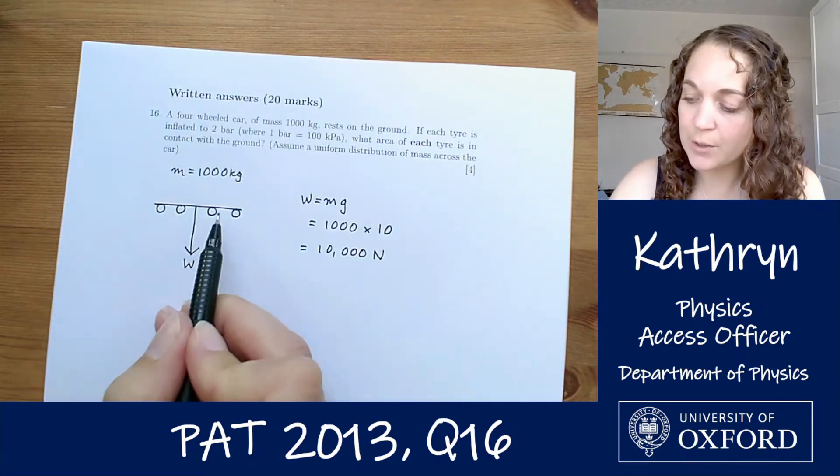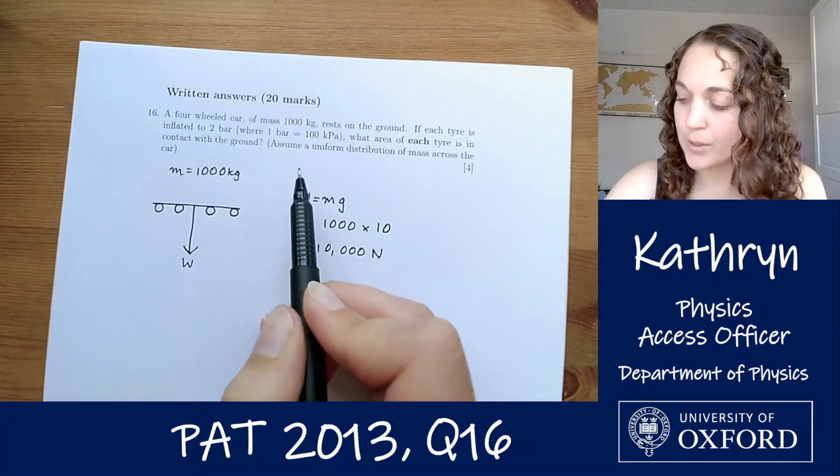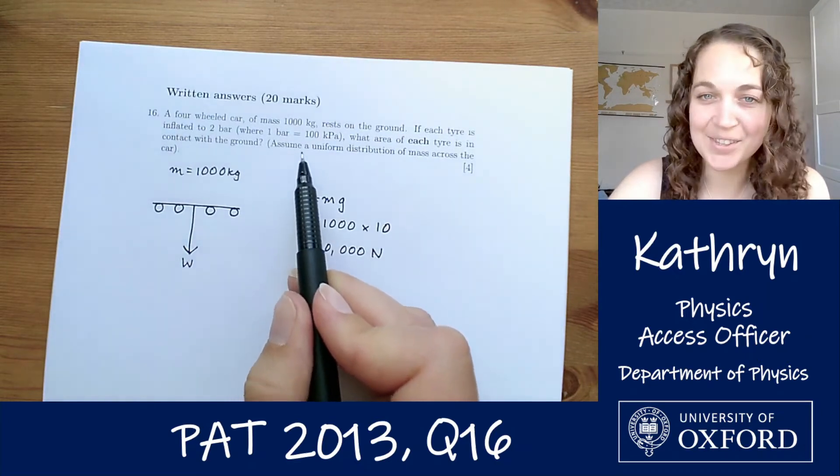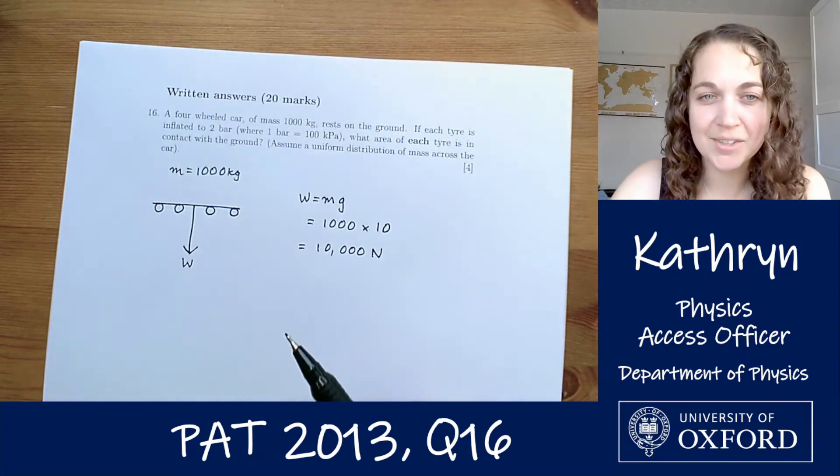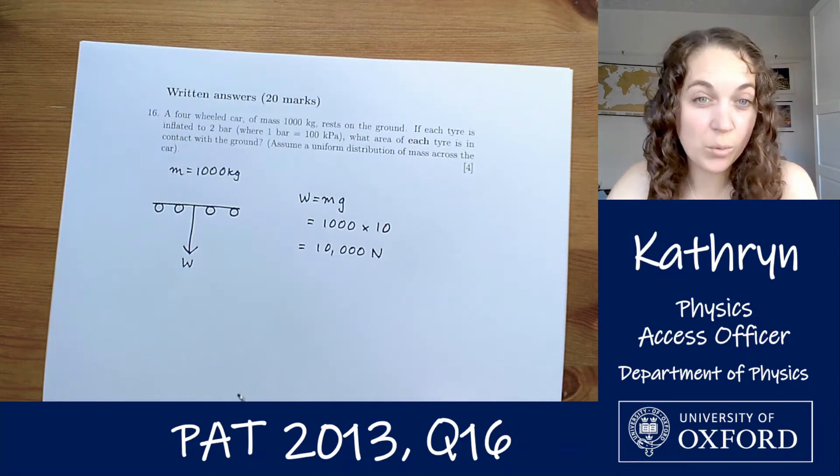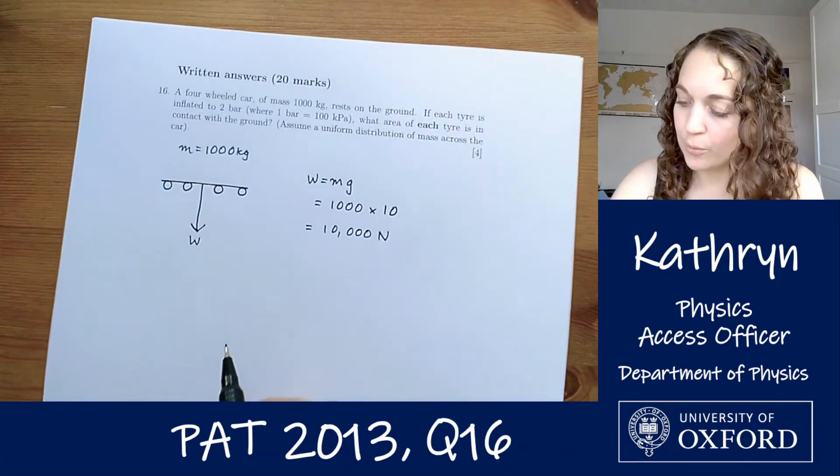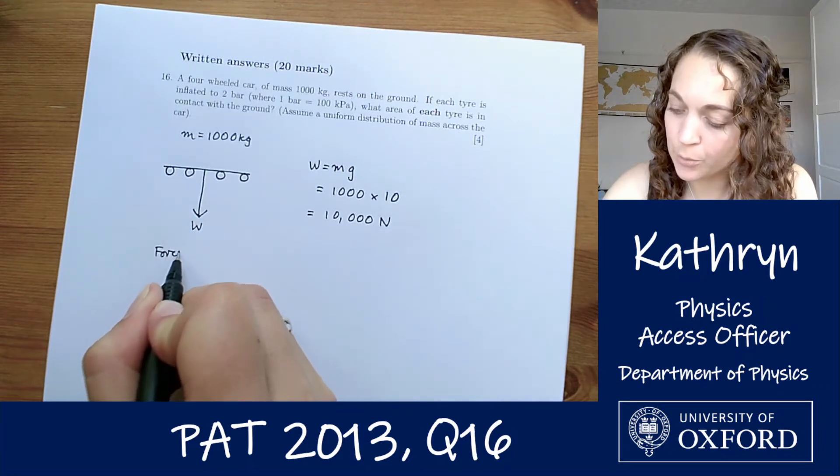And that is going to be equally distributed across the four wheels. That's what it's trying to tell us when it says assume a uniform distribution of mass across the car. There's nothing to make us suppose that there's going to be more mass or more weight over one wheel than another. So the force on each wheel is going to be a quarter of the total force.